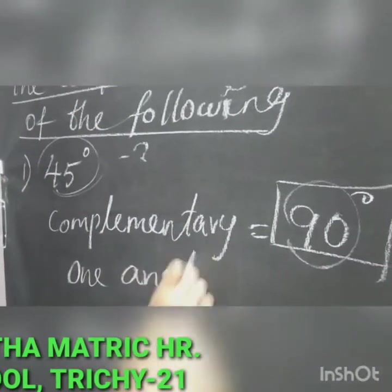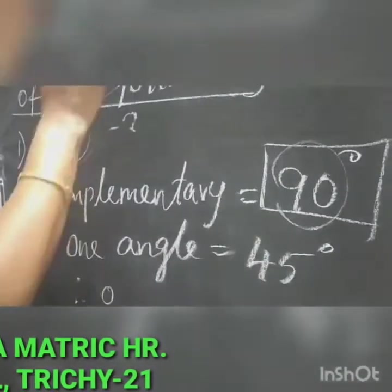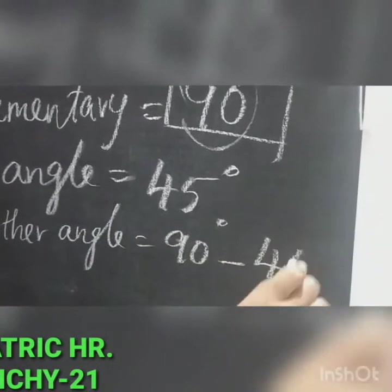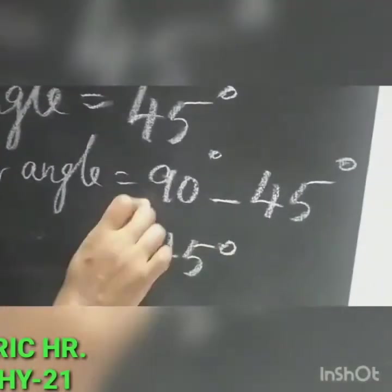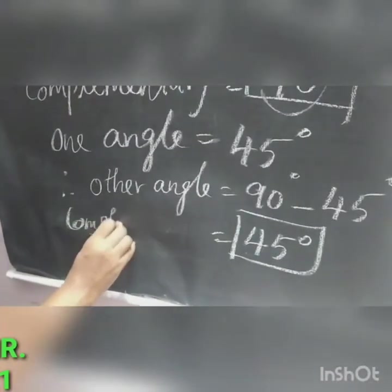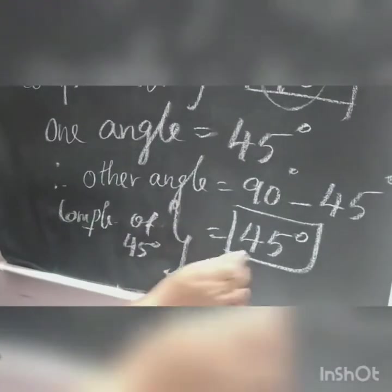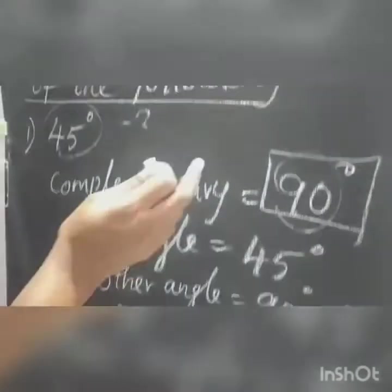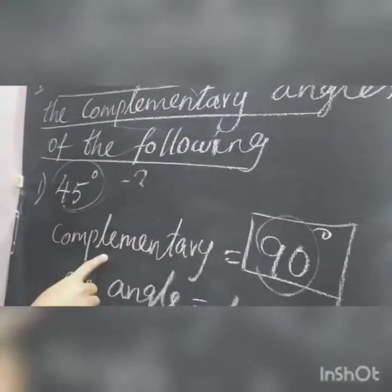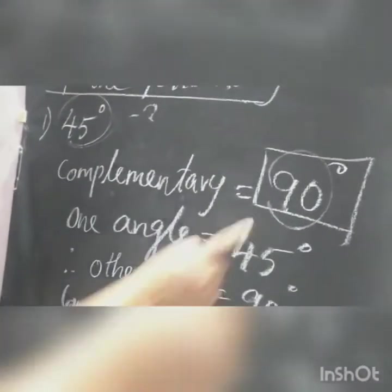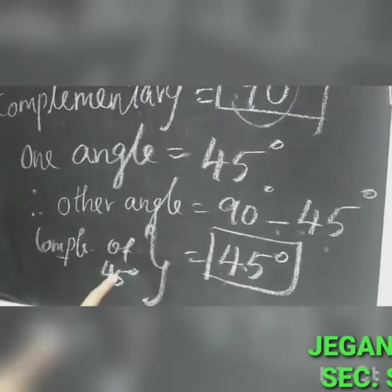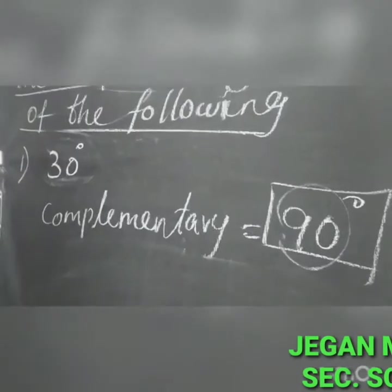One angle is 45 degrees, so you have to find the other angle. Other angle equals 90 degrees minus 45 degrees, so the answer is 45 degrees. Therefore, the complementary of 45 degrees is also 45 degrees. Complementary means pair of two angles with a sum of 90 degrees — one angle is 45, so 90 minus 45 gives balance 45 degrees.